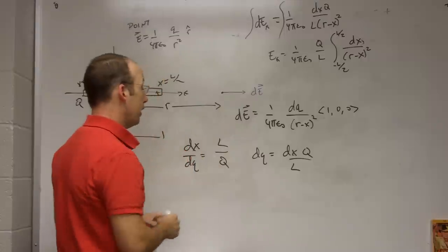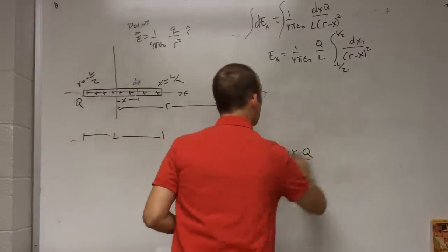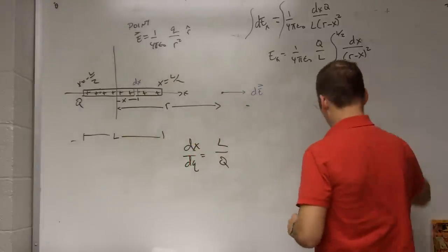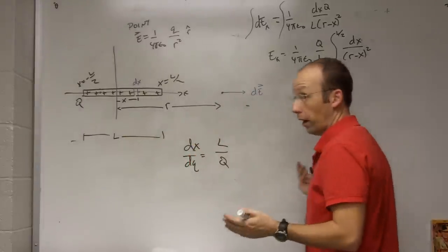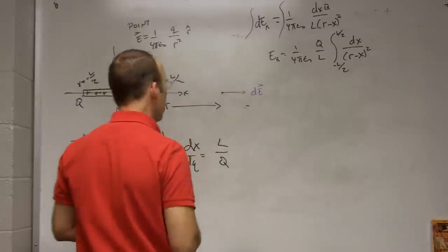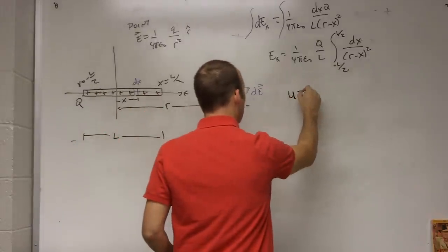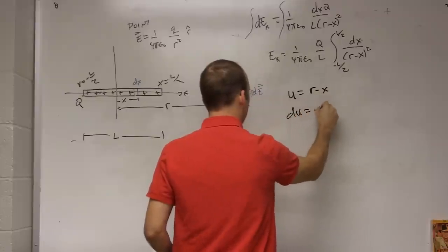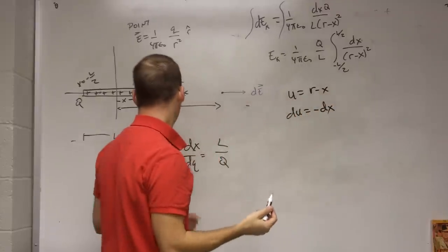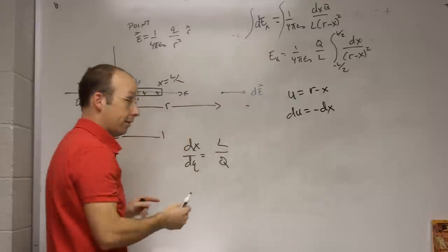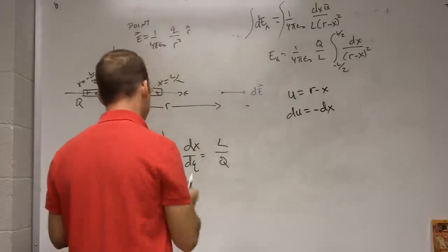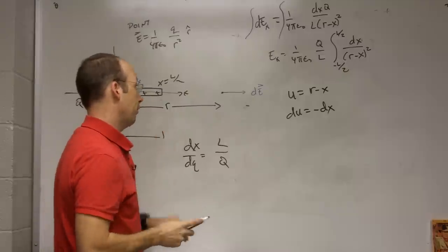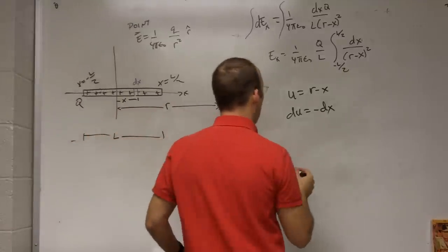So now I can just, I just need to do this integral. Well, I have DX over something squared. I'm going to have to do a U substitution. So let me say U equals R minus X. DU equals negative DX. R is a constant. In this case, because I'm trying to find, it's kind of a variable in that at the end of the problem, I want to be able to say, I'm moving that wherever I want. But in this integration, it's a constant.